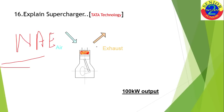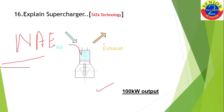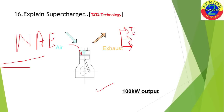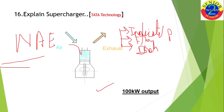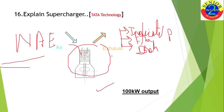In a naturally aspirated engine, air comes in from one side and goes to the cylinder, generating power. There are three kinds of power used in automobile engines: indicated power, frictional power, and brake power.